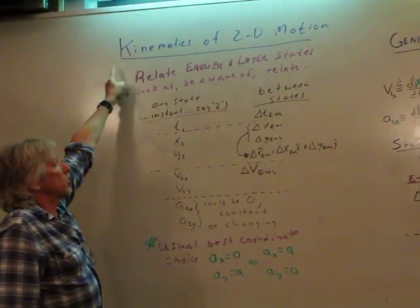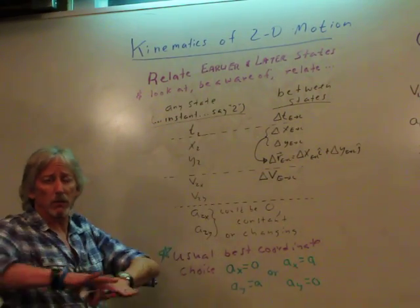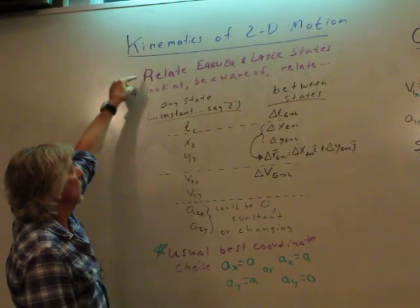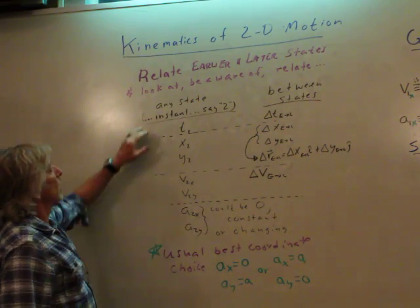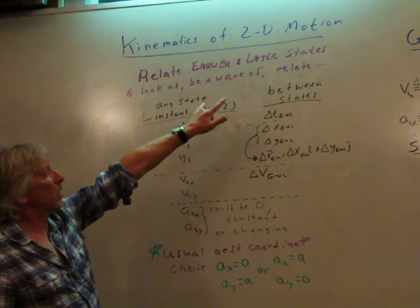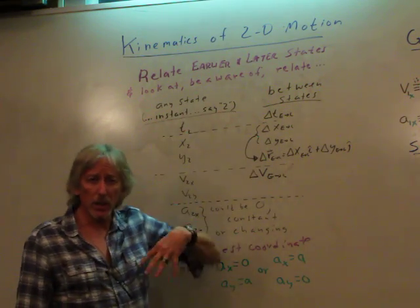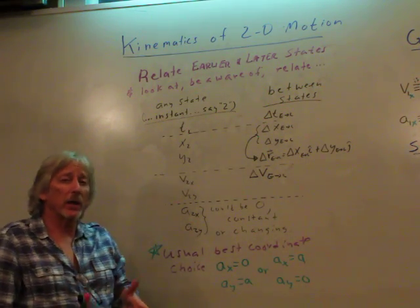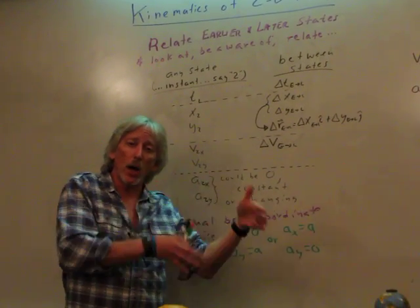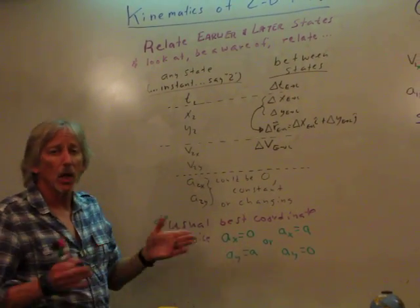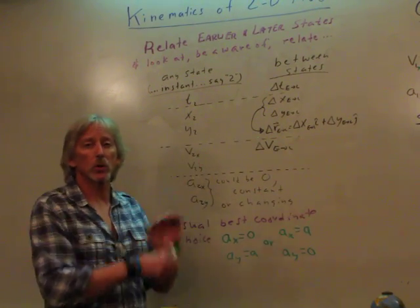Kinematics describing motion in two dimensions along a flat surface, for example. We're going to relate earlier and later states, as usual. We're going to look at, be aware of, and relate the kinematic concepts. But now we've got to keep track of the X, and think of that as one column, and the Y motion separately, and we'll put it together to get the actual combined motion.